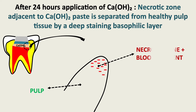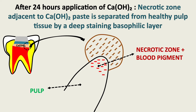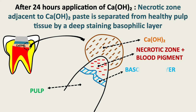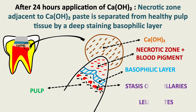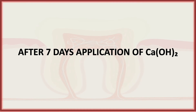Look at the figure — we have healthy pulp, a necrotic zone with blood pigments, and a calcium hydroxide layer. The necrotic zone and healthy pulp are separated by a basophilic layer within or after 24 hours of application of calcium hydroxide. There is stasis of capillaries plus leukocytes around the basophilic layer.